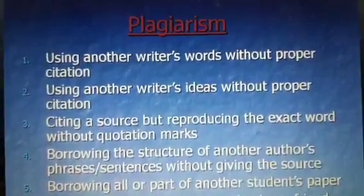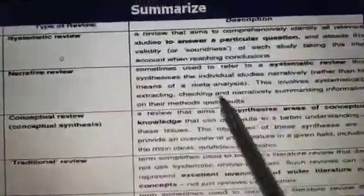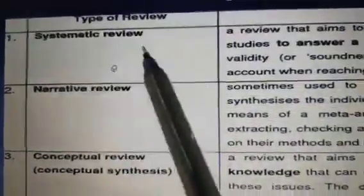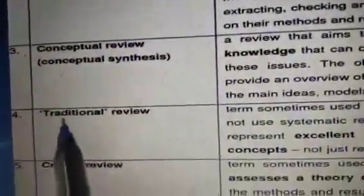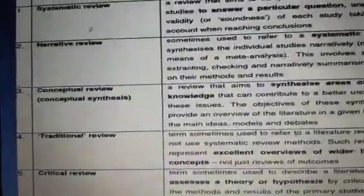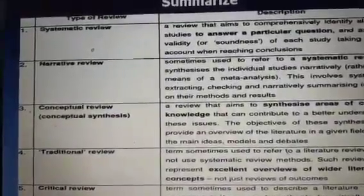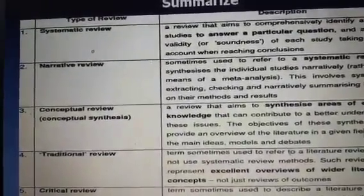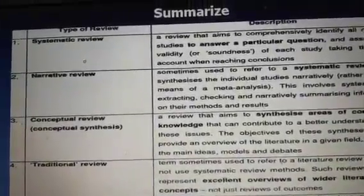To summarize, the types of review covered include: systematic review, narrative review, conceptual review, traditional review, critical review, and state-of-the-art review. I have completed this summary and you should go through this topic and move forward for your final examination. Thank you dear students, take care of yourself.